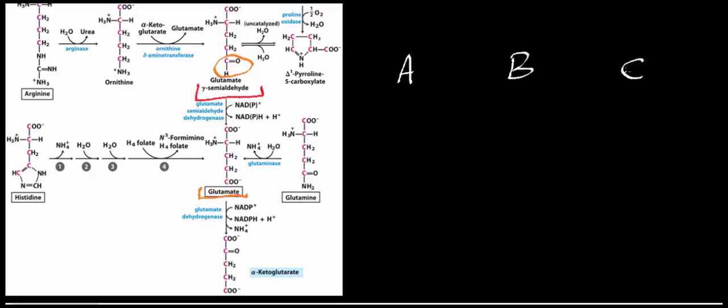At least in the direction that it's showing here, which is the only one it runs in under physiological conditions, one of them reacts with only NAD+. Another one reacts with only NADP+, and then the third one can react with either NAD or NADP+. These are the three kinds of glutamate dehydrogenases.